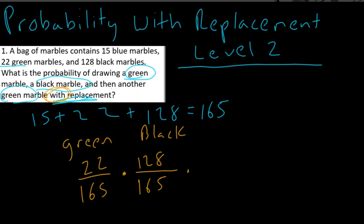And then the probability of drawing our first black marble is going to be 128 out of 165. Now remember, we pull out that marble, we look at it, we put it back in. So once again, when we draw our third marble, it's still out of 165. And we're asking, hey, well what's the probability of drawing a green marble again? And so, since there's 22 green marbles because we put that first one back, well we're going to multiply those two numbers.